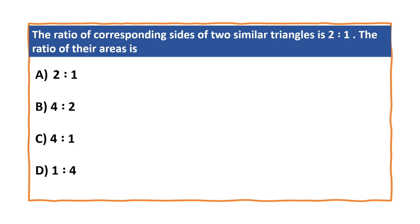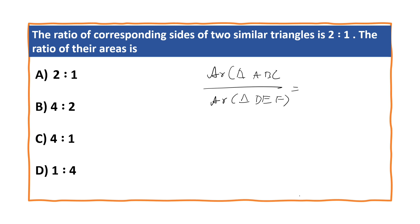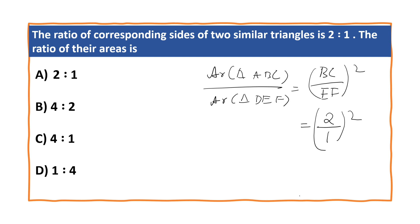The other question is: the ratio of corresponding sides of two similar triangles is 2:1; the ratio of their areas is? Using area of triangle ABC upon area of triangle DEF equals (BC / EF)², with ratio of corresponding sides being 2:1, the ratio of areas is 2² : 1² = 4:1. So the answer is C, 4 is to 1.